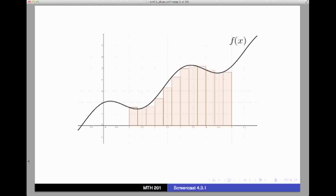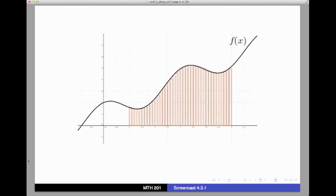We get more rectangles by increasing the number of subdivisions of the time interval. We denoted that number by n. So as n increases without bound, the Riemann sum gets better and better as an estimate.